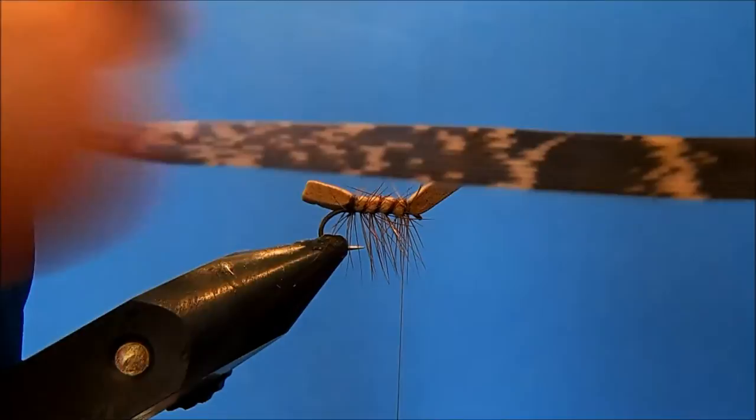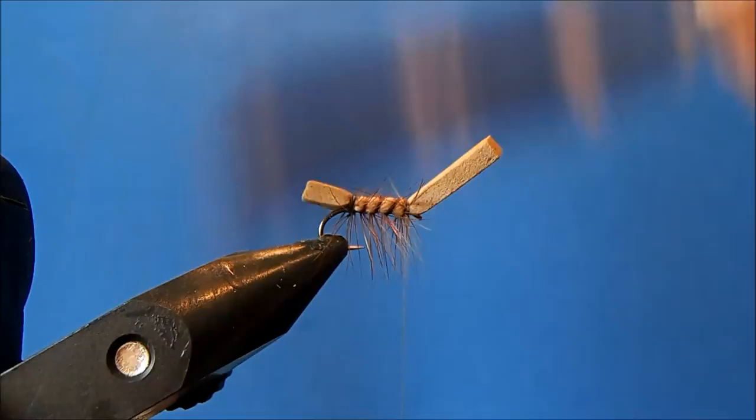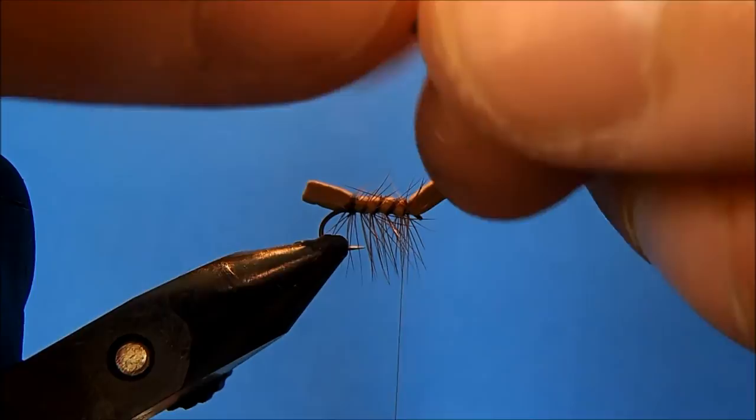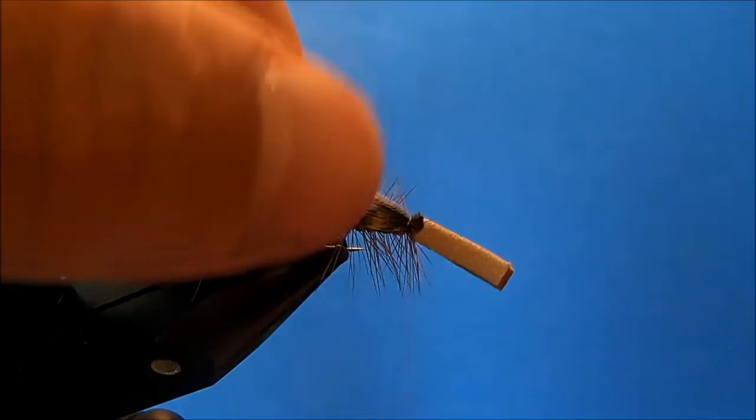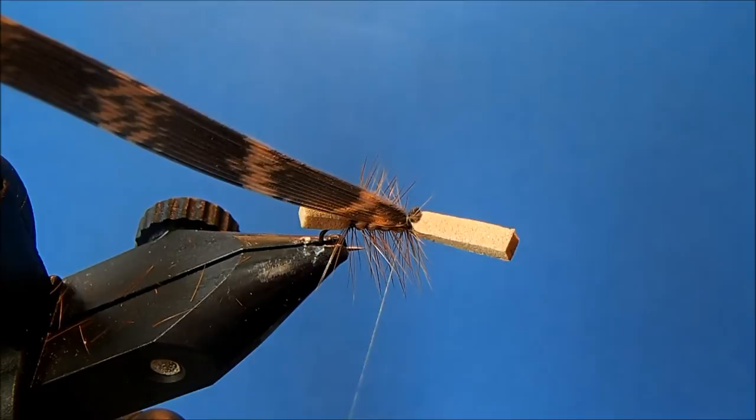It's stiff here at the bottom, and as it goes further out it gets a little bit more pliable. So I'm going to trim off the section that's a little bit more pliable, just make a nice even cut, and I'm going to tie this in right on top. I'll set it over, pull straight down, and all I'm looking for is to make sure that it's centered.